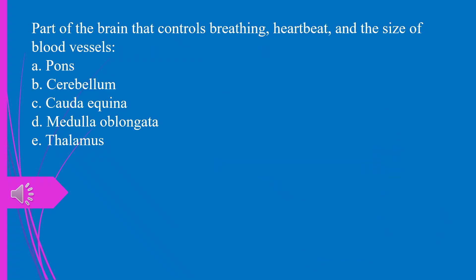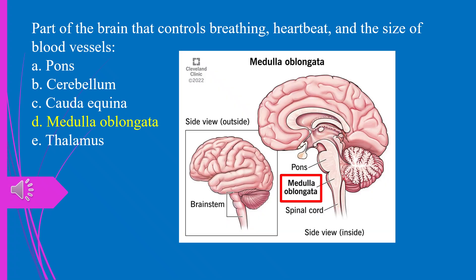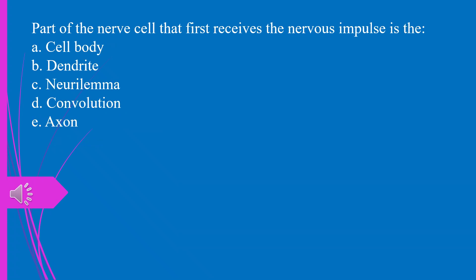Question 15. Part of the brain that controls breathing, heartbeat, and the size of blood vessels: a) pons, b) cerebellum, c) cauda equina, d) medulla oblongata, e) thalamus. The answer is d, medulla oblongata.